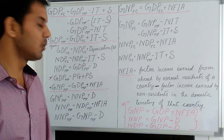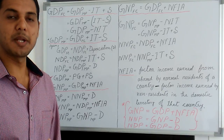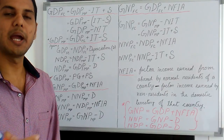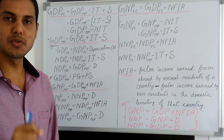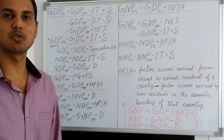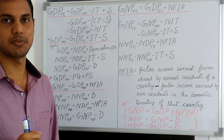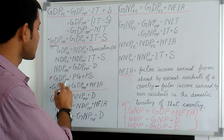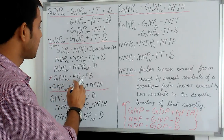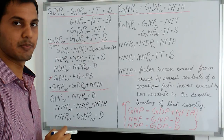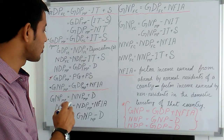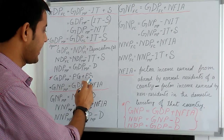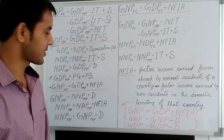GDP at market price refers to what buyers pay, but this is not what producers actually receive. GDP at market price equals the sum of current year prices (P) multiplied by goods (Z) and services (S), where P denotes current year prices, Z denotes goods, and S denotes services.